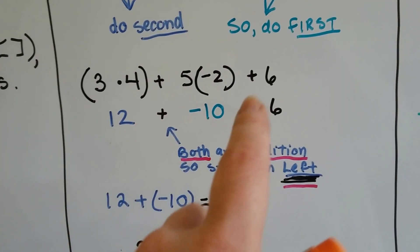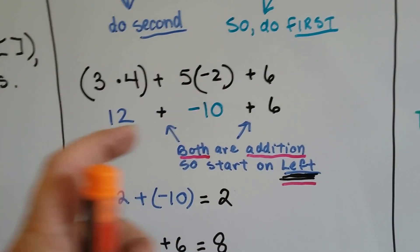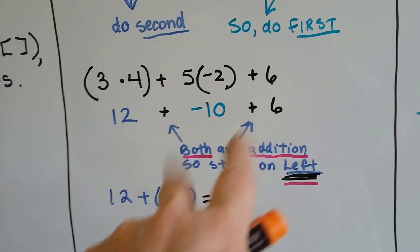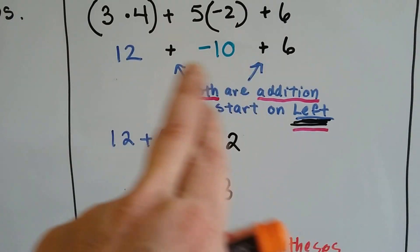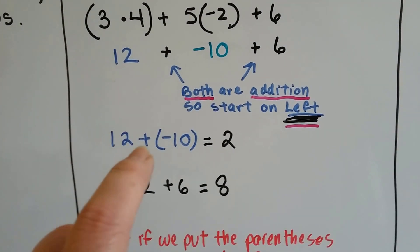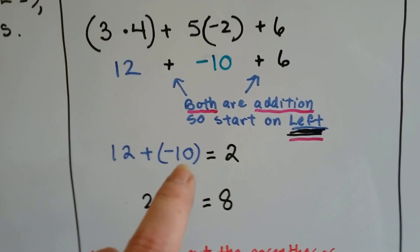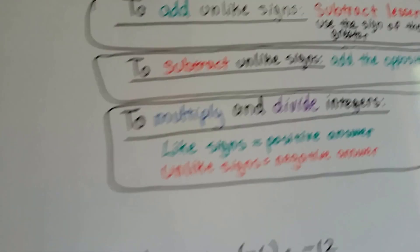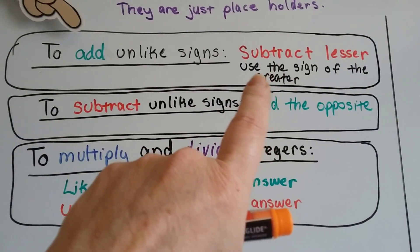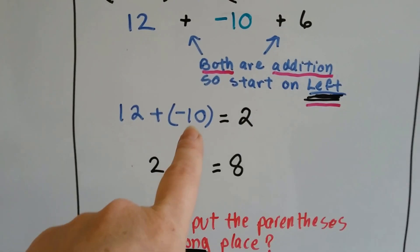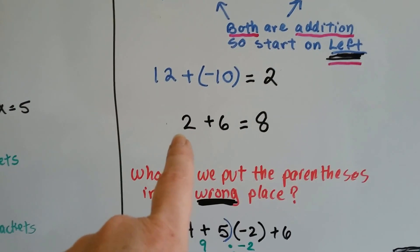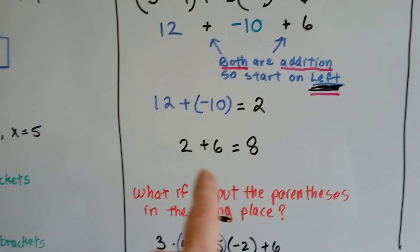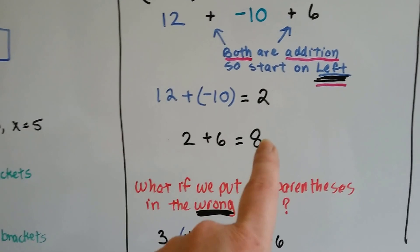We do 5 times negative 2, which gives us negative 10. We do 3 times 4, which gives us 12. Now we've got 12 plus negative 10 plus 6. These are both addition, so we start on the left and go across. When you have two operations that are the same, start on the left and go across — we're at the end of PEMDAS, down to add and subtract. When we add unlike signs, we subtract the lesser one and take the sign of the greater one: 10 from 12 leaves 2, positive. Then positive 2 plus 6 is 8. Our answer is 8.